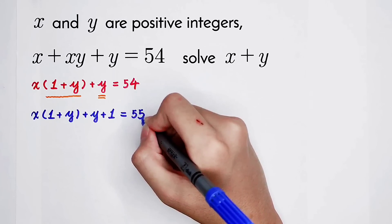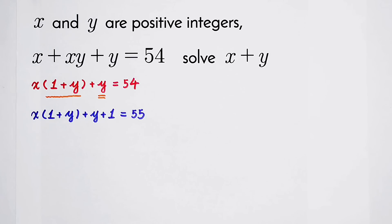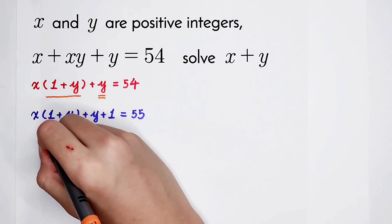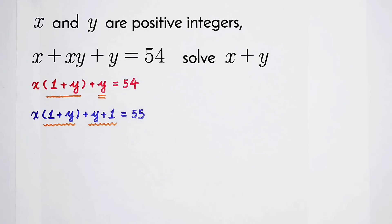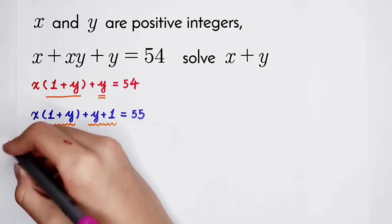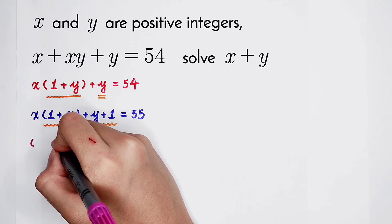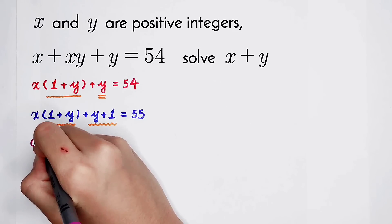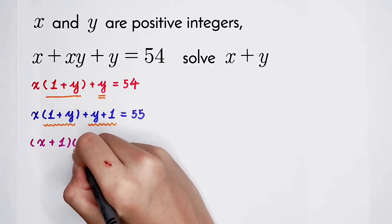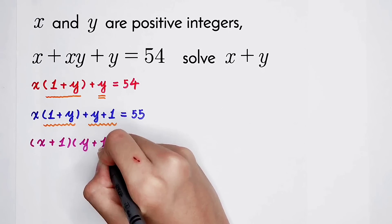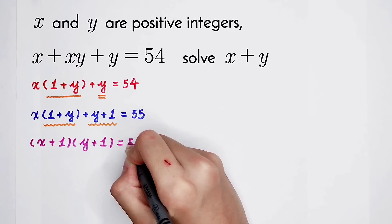54 plus 1 is 55. I think this number is very good. It's a good looking number, isn't it? So now, 1 plus y, y plus 1, take it out. Then you have good luck: x plus 1 times y plus 1 equals 55.